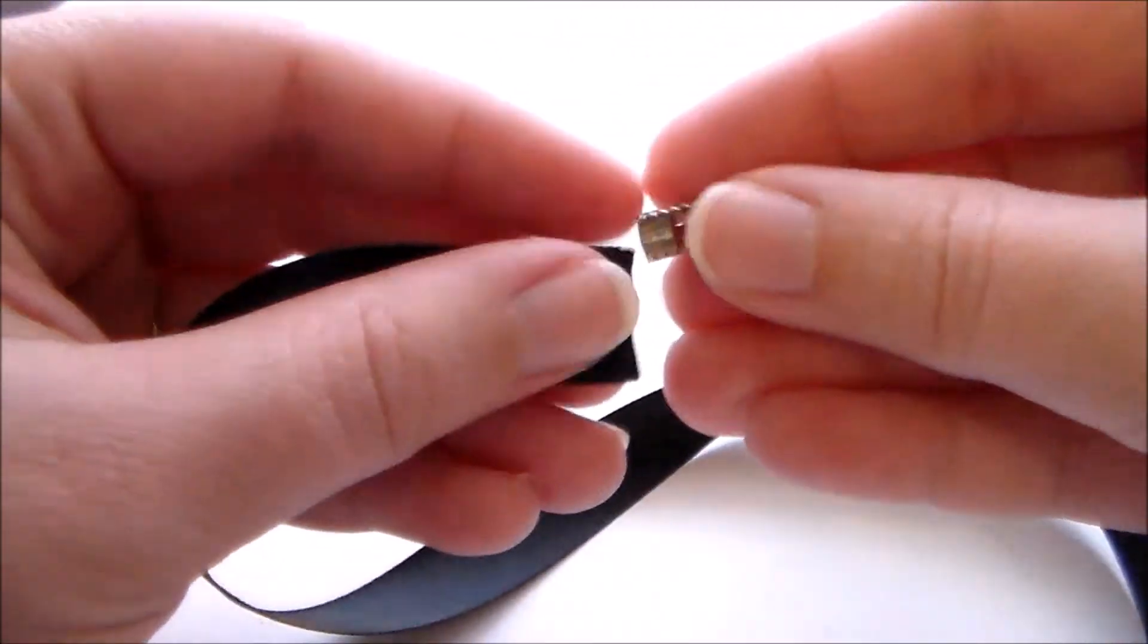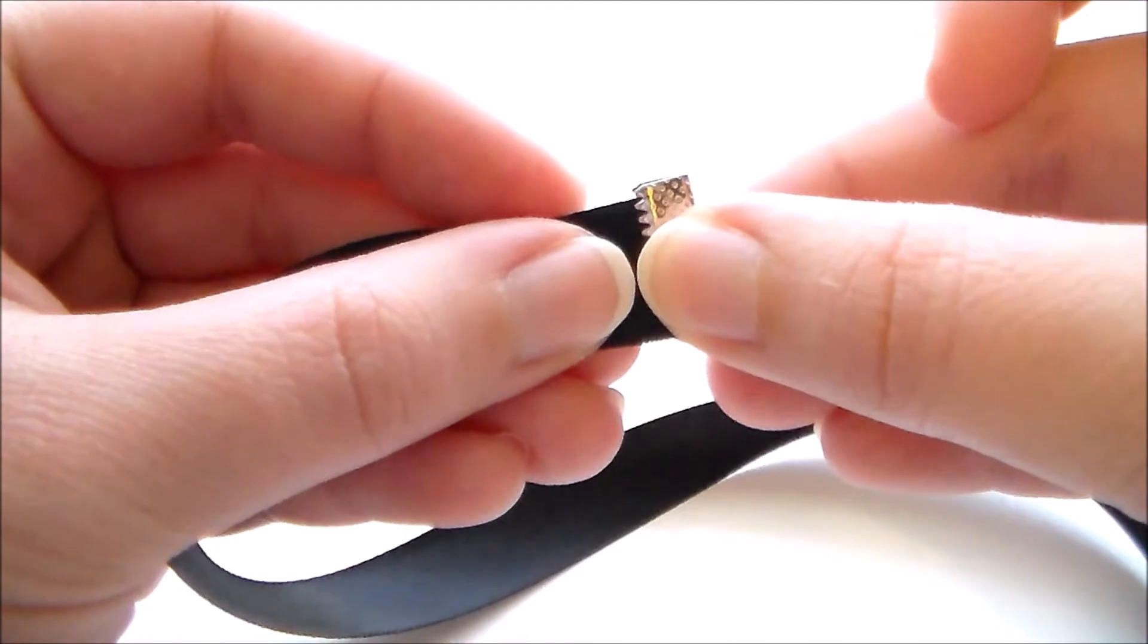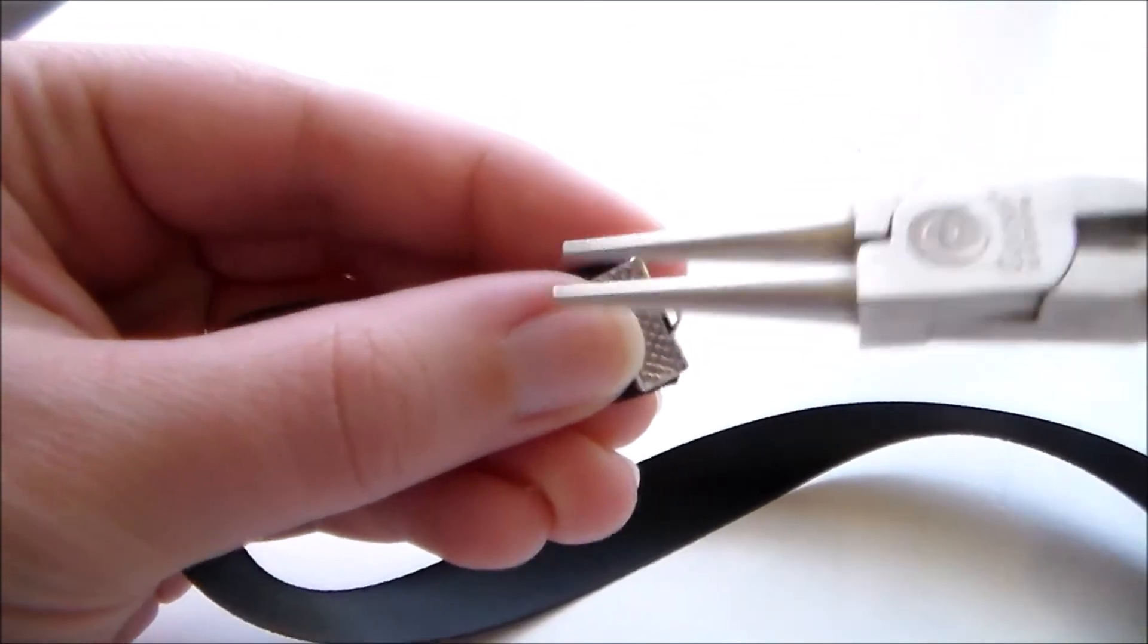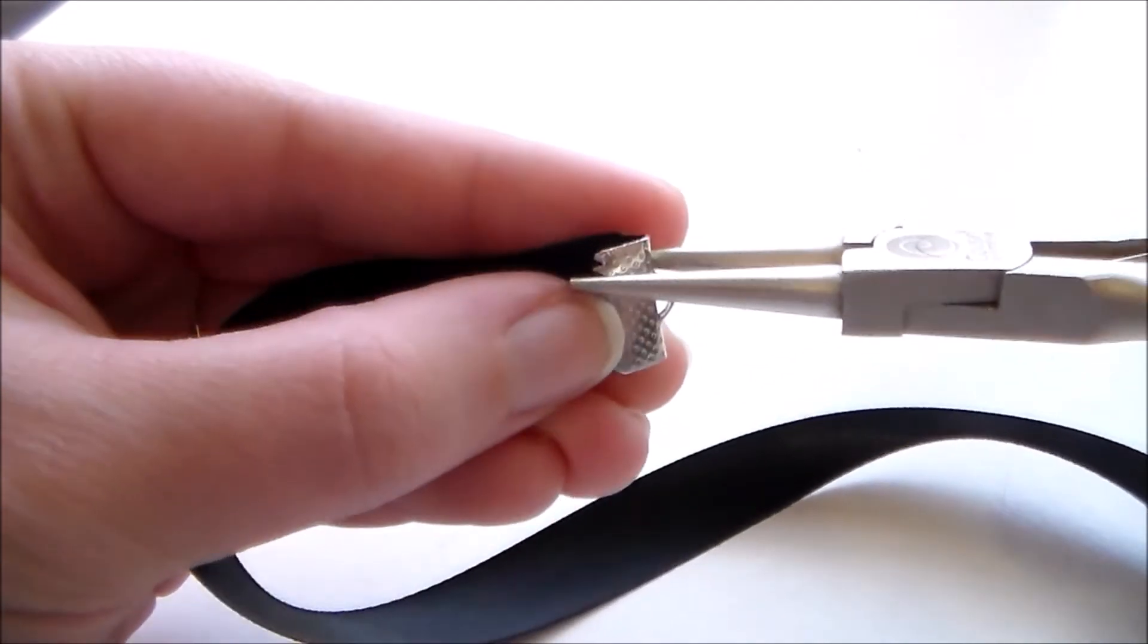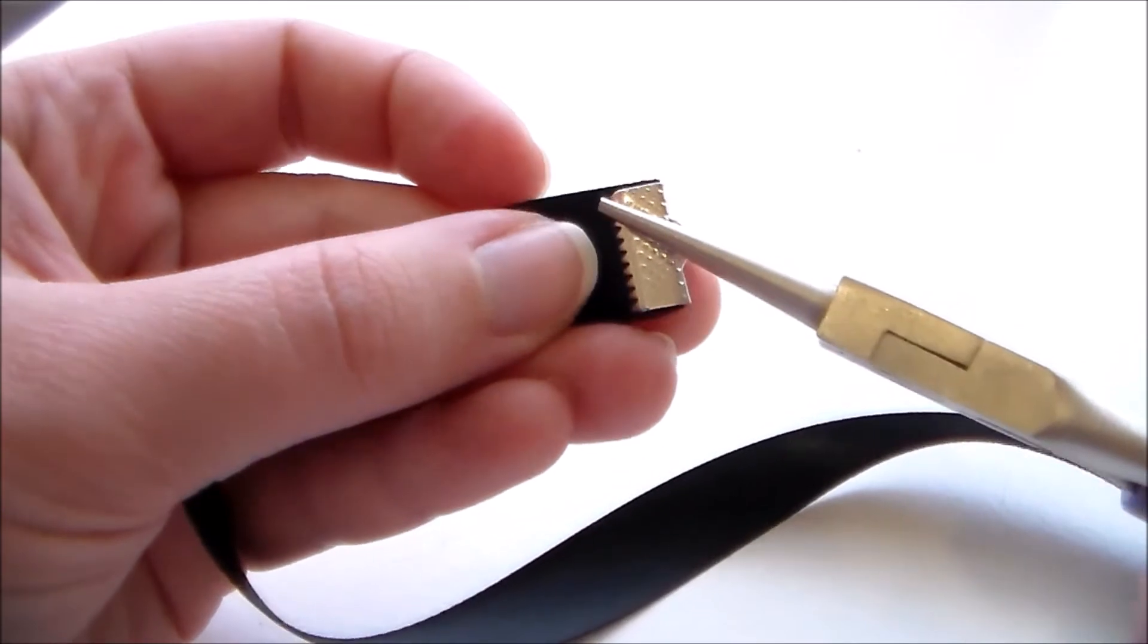To attach the hardware to it, I'm using some ribbon clasps that just attach onto the end of the ribbon, and you squeeze them into place. You could use a bit of glue if you're concerned about them staying.